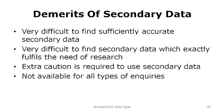There are also demerits of secondary data: it can be very difficult to find sufficiently accurate secondary data. The complete data may not be available, and raw or original data may not be available in many scenarios. It is very difficult to find secondary data that exactly fulfills or matches the need of your study. Extra caution is required when using secondary data, and for all types of inquiries or research, secondary data may not be available.